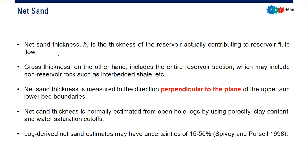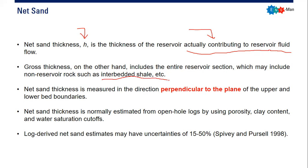We start with some descriptions. Net sand thickness, denoted by H, is the thickness of the reservoir actually contributing to reservoir fluid flow. Gross thickness, on the other hand, includes the entire reservoir section, which may include non-reservoir rock such as interbedded shale, etc.